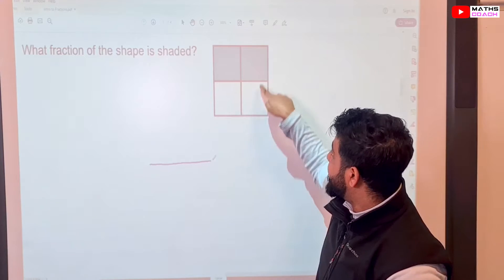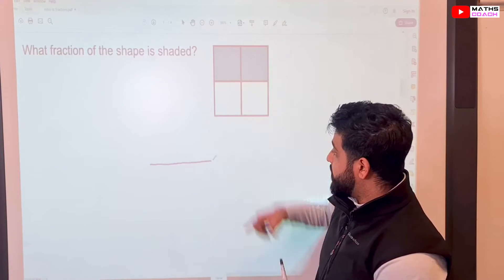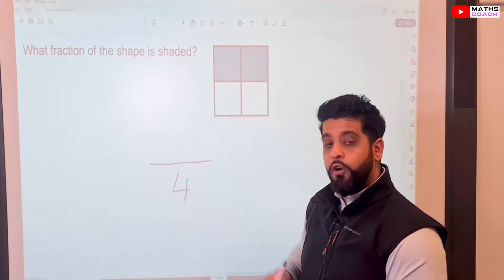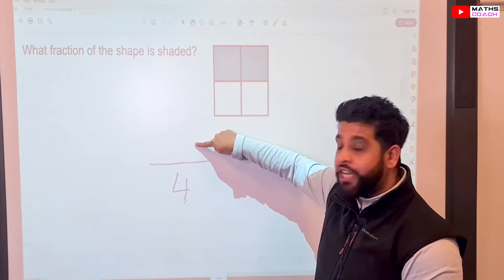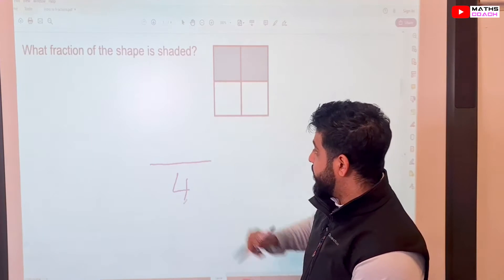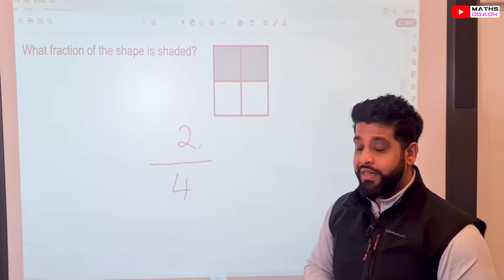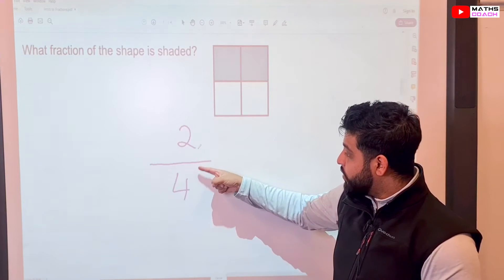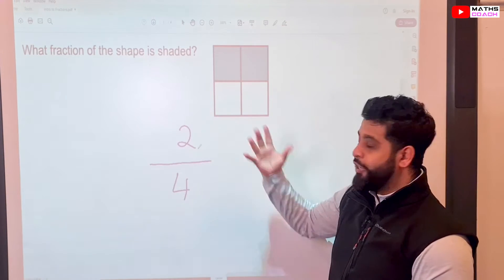You should have guessed that there will be four parts, so therefore, it's a total of four parts. How many parts are shaded? We have two parts which are shaded, so two becomes our numerator. So two out of four parts are shaded.